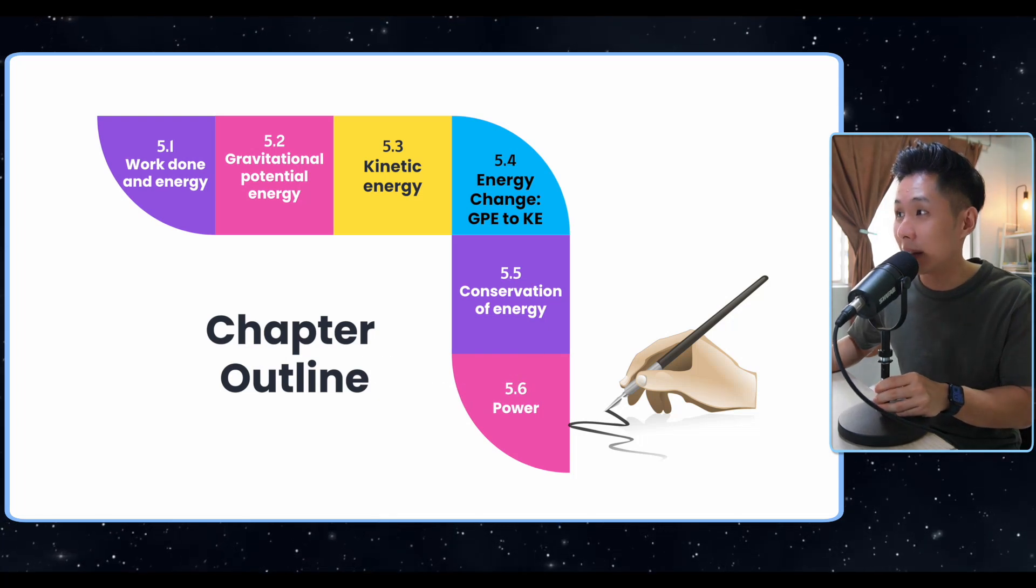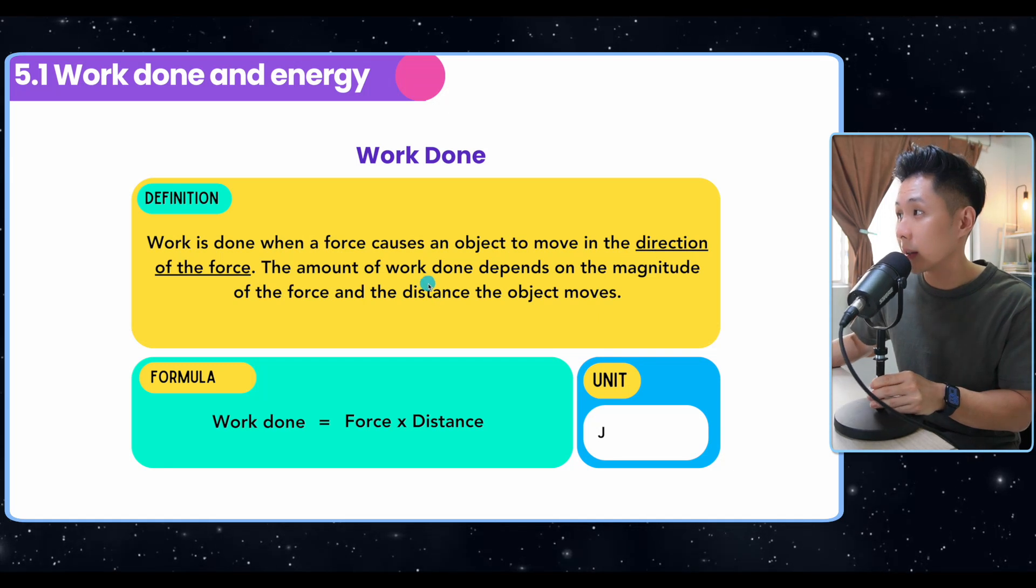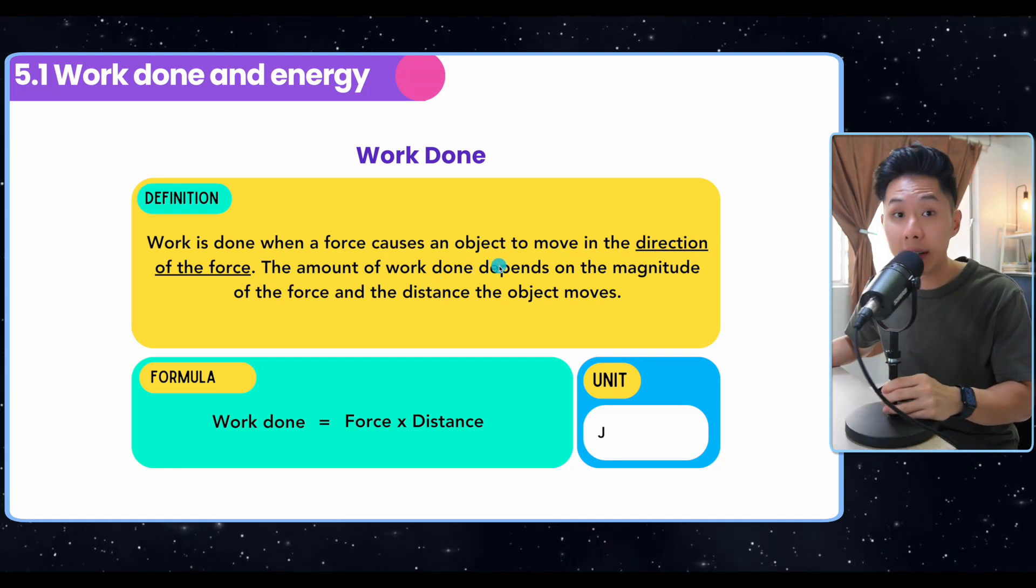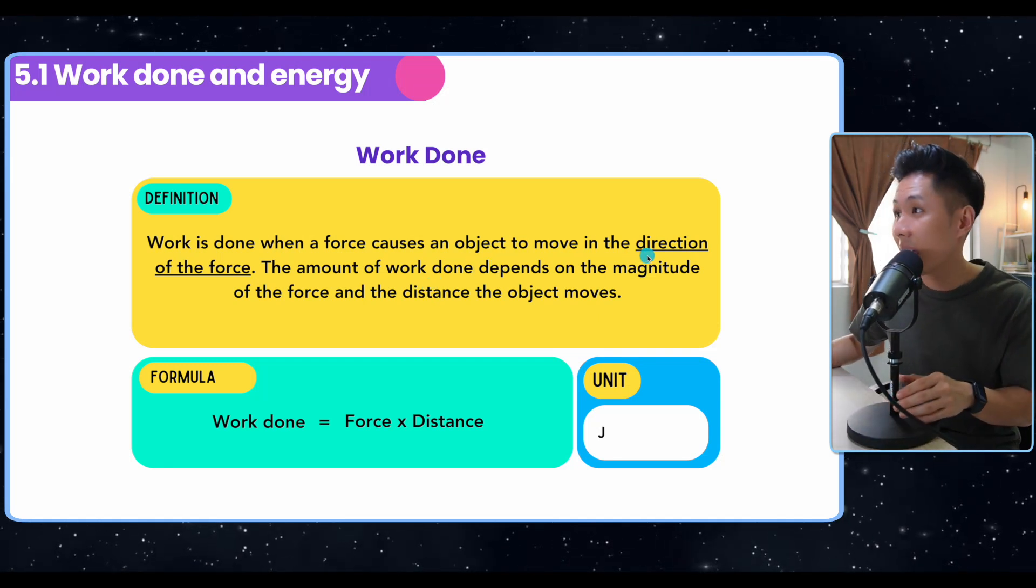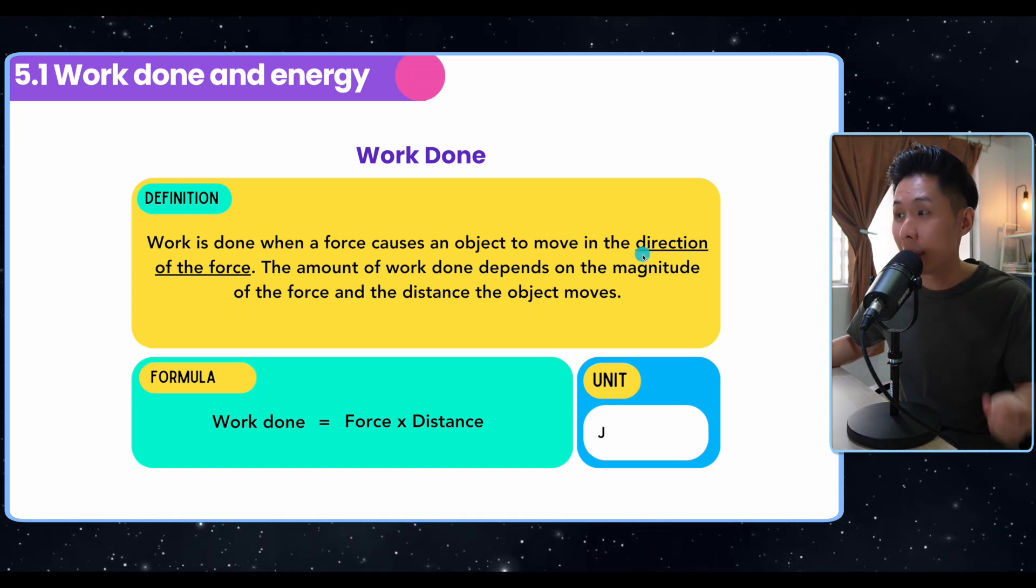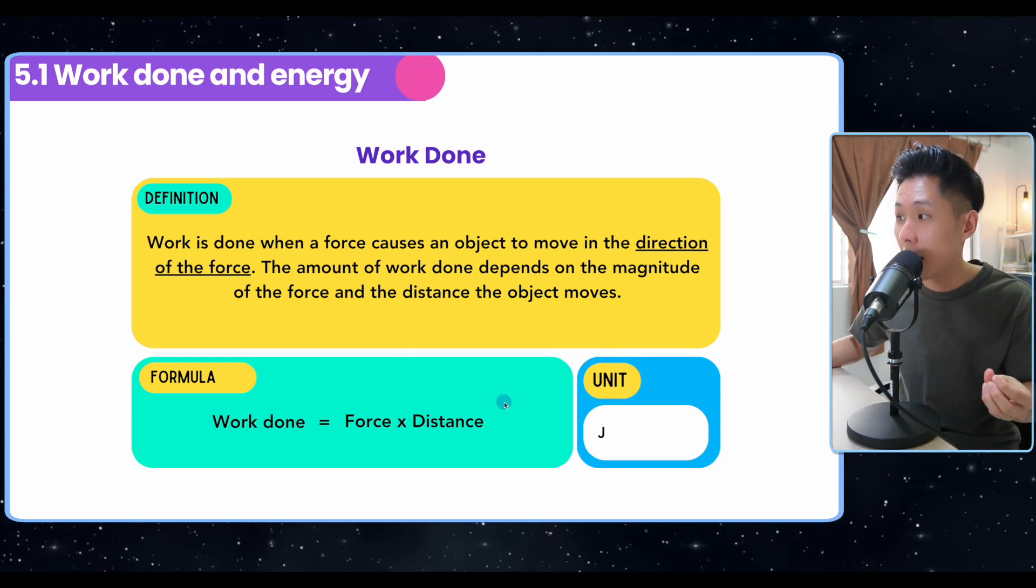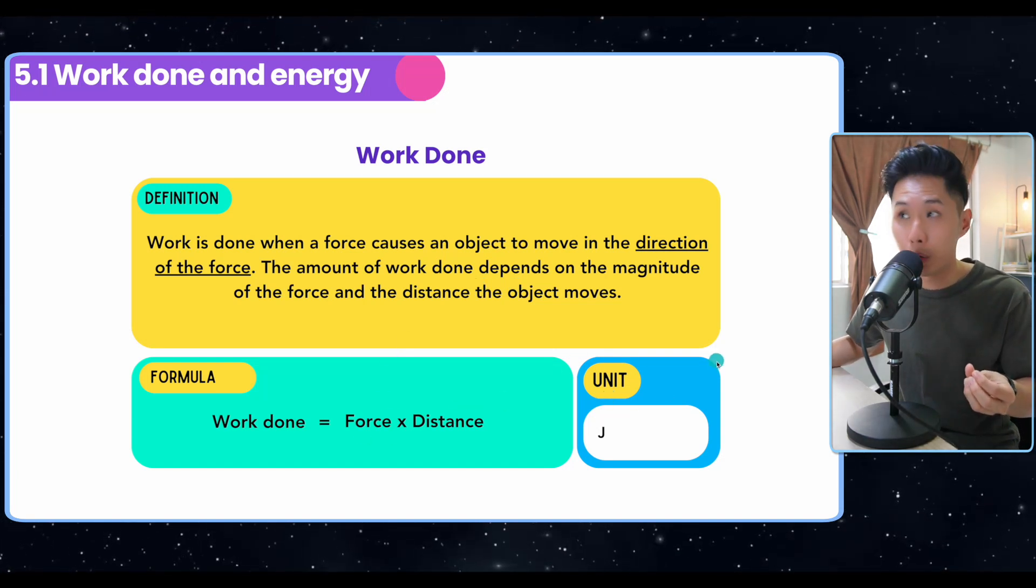This is our chapter outline for the day. Now let's move on to work done. It's when a force causes an object to move in the direction of the force. I underline direction of the force because it matters so much when it comes to calculating work done. The amount of work done depends on two things: the force that you apply, and the unit is joules.